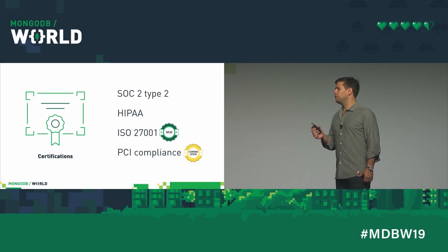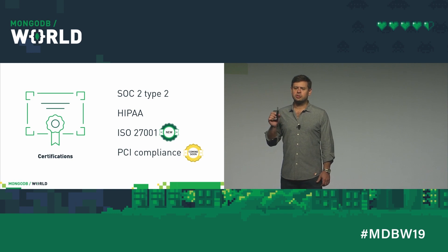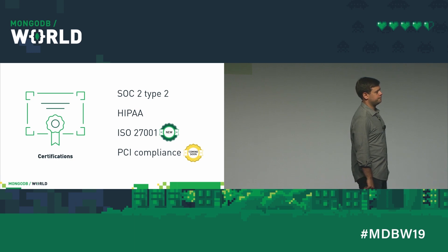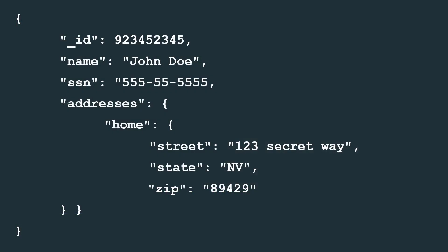But there is some data that is so sensitive, no matter how many certifications we have, you're still nervous about putting it in a database as a service. Let's take a look at an example. Here's a document. It's got a social security number in it. No MongoDB employee would let me put their social security number on the screen — I tried, none of them would do it. It's private. You don't want it leaked, you don't want anyone to see it. Storing this document in Atlas might be a little scary.